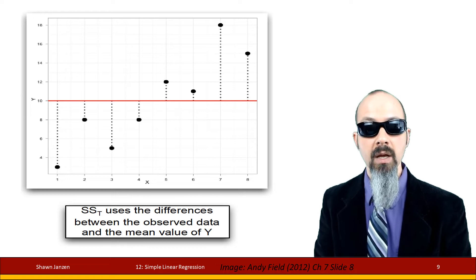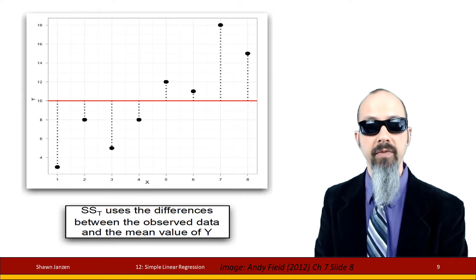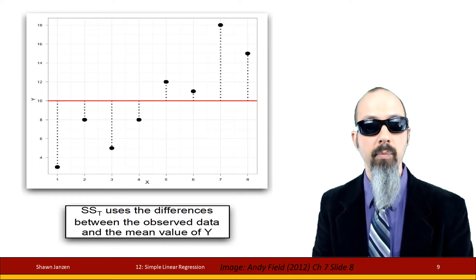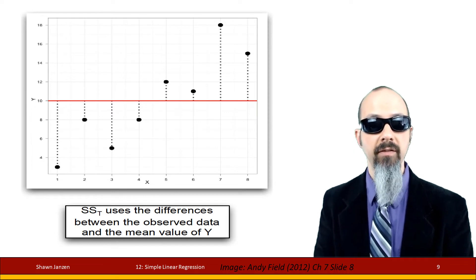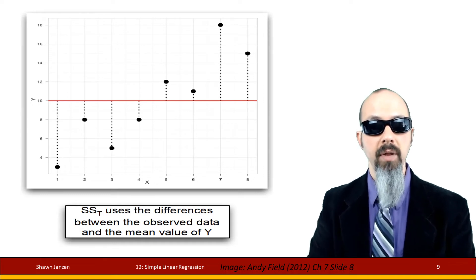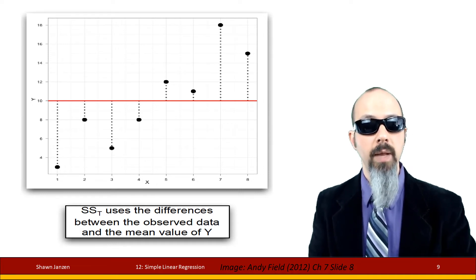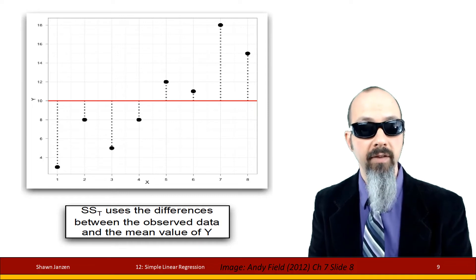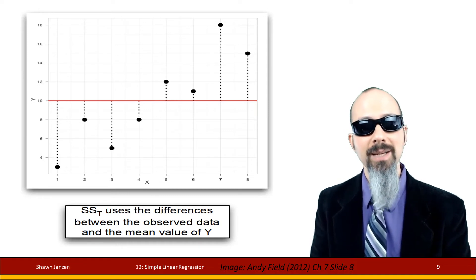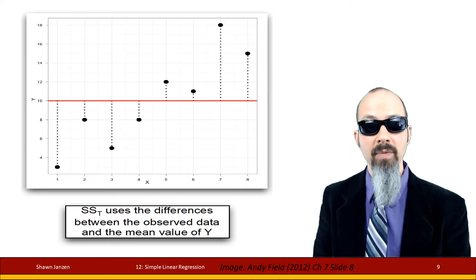If we look at this graphically, it makes more sense. The SST is the total possible variation. If we were saying before that you could predict your variable better with just the mean of the dependent variable, then the sums of squares total takes into account each of our plot points and the distances from those plot points to the mean of the dependent variable.